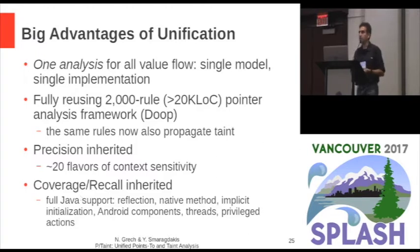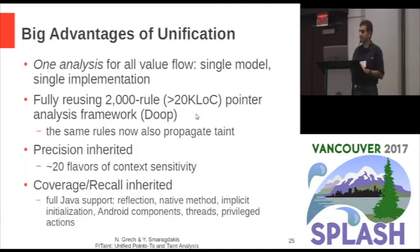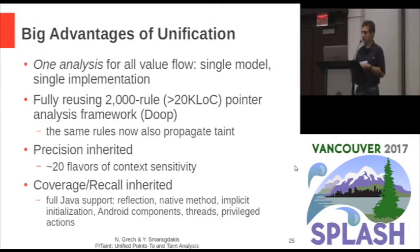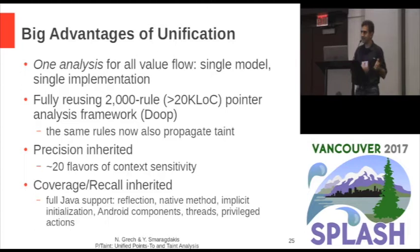This unification approach has several big advantages. It's one analysis for all value flow, meaning we can fully use a very large framework — one with 2,000 inference rules or more, tens of thousands of lines of declarative code. The exact same rules now also propagate taint. We inherit all the precision of the underlying framework, including some 20 different flavors of context sensitivity, and we inherit all the language feature coverage, including full Java support for tricky things like the reflection API, several native methods, implicit initialization, Android lifetime, threads, and privileged actions.